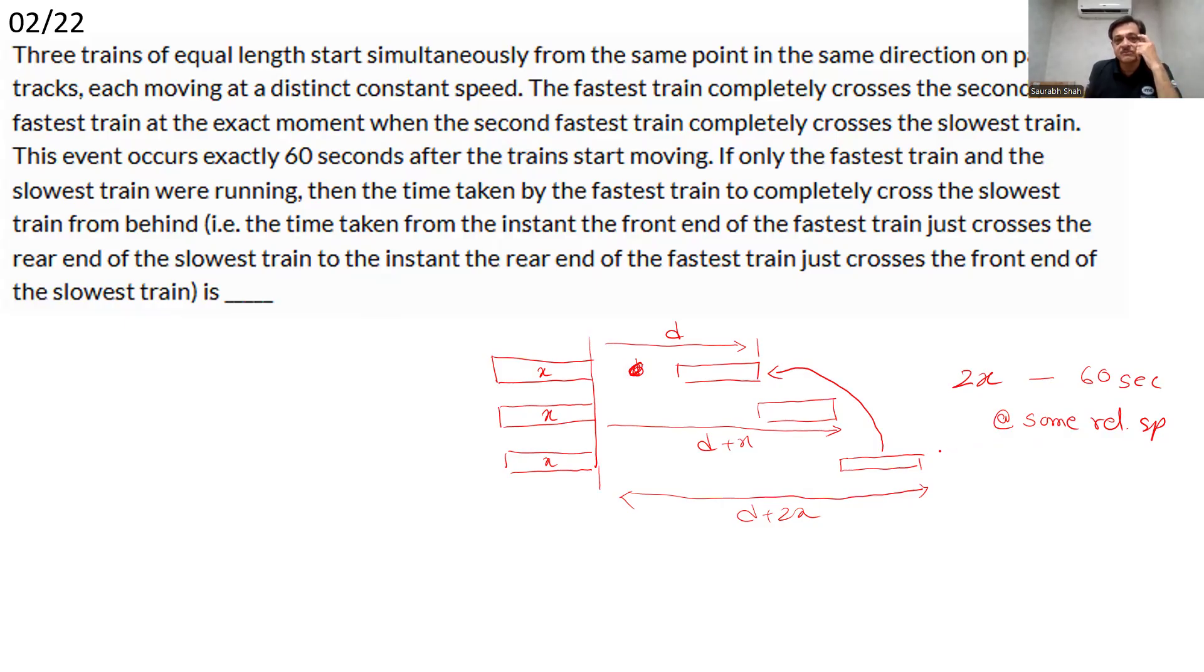Now understand the question. The question says, what will be the time taken by the fastest train to cross the slowest train? And the definition is explained clearly, that from the instant the front end of the fastest train just crosses the rear end of the slowest train. This is exactly the crossing distance. So to cross the slowest train, the fastest train will have to cover its own length and the length of the slowest, which is again 2x. All the lengths are x, x. So it has to cover 2x at the relative speed, which is already 60 seconds. We don't need to do anything.